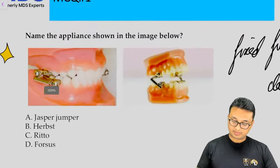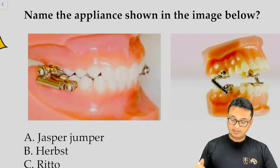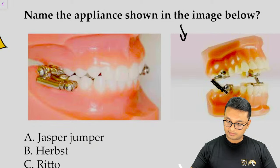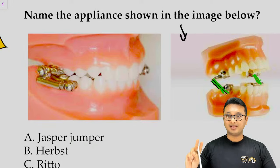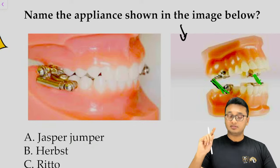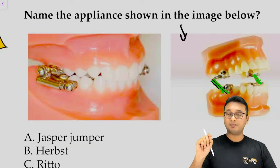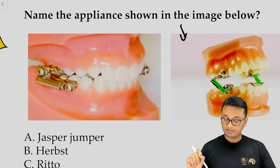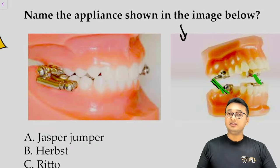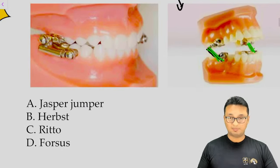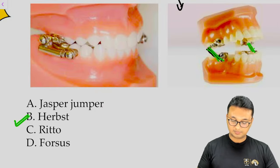You have to understand that it is made up of a telescopic spring mechanism, as you can see in this figure. It is composed of a telescopic spring mechanism on both sides — it is a bilateral appliance. It is attached to the molar crowns on the upper first molar and the lower first molar. According to this description, the appliance is the Herbst appliance.